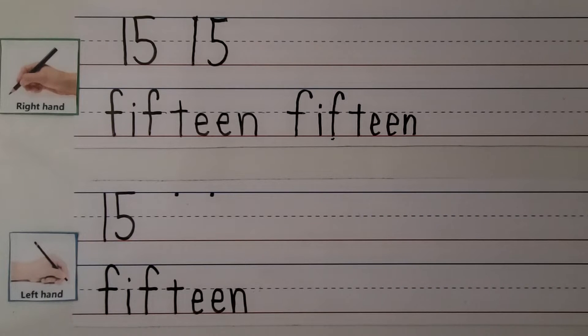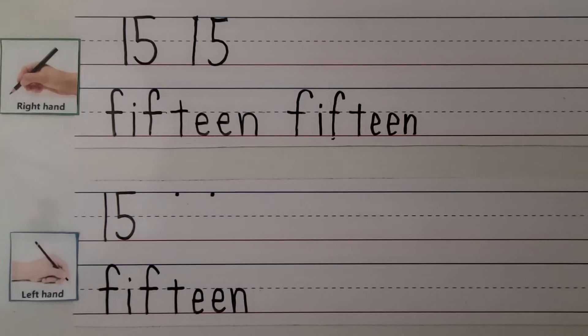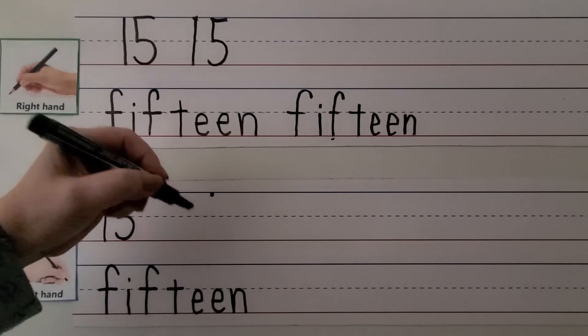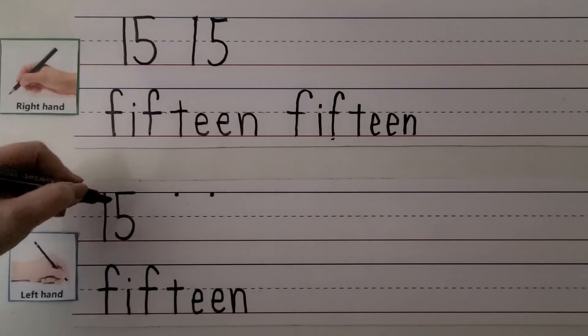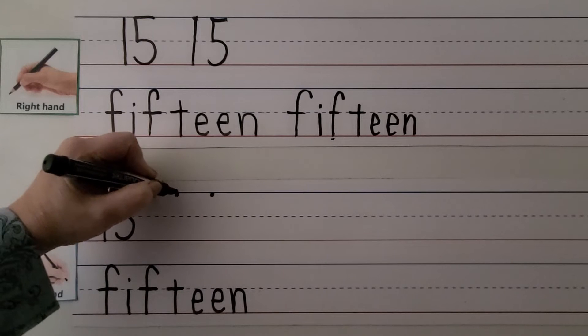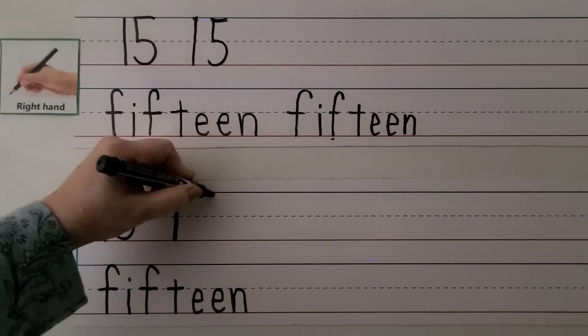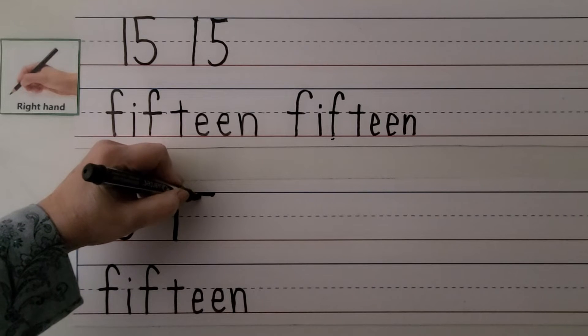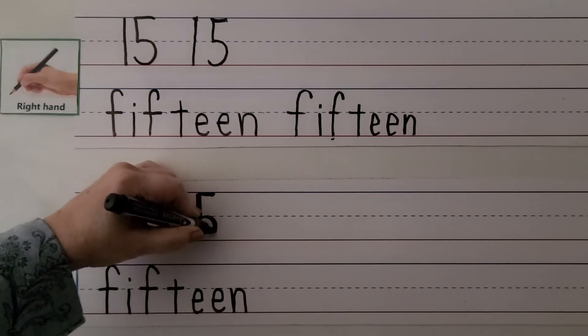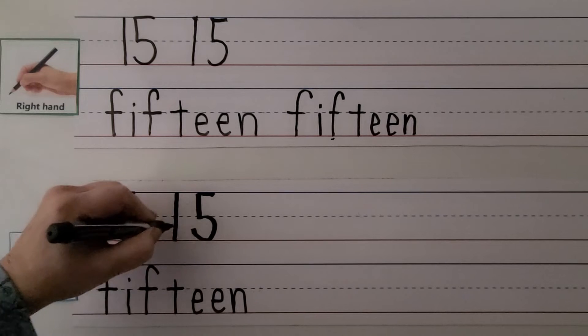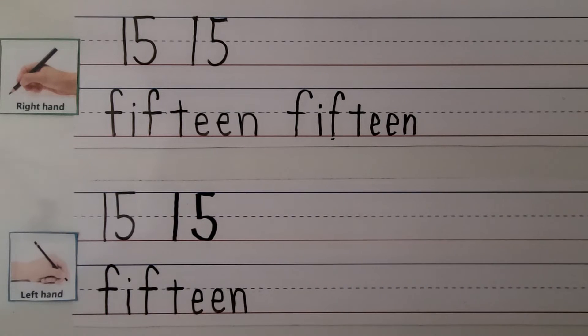We can do it with our left hand. For those who write with this hand, we make the 1 and then the 5. We make a 1. And for the 5, we pull it across. We go down and around. The 1 and the 5 together make 15. That's the number.